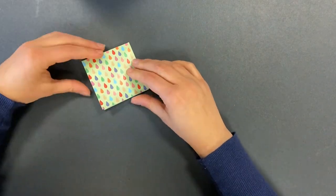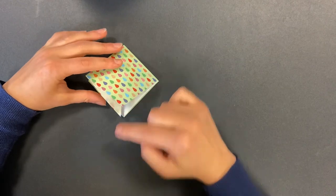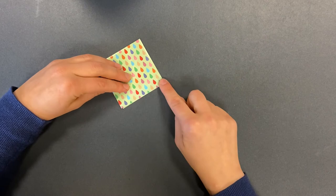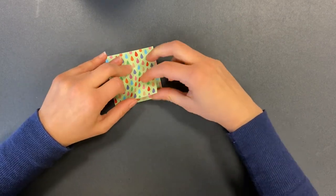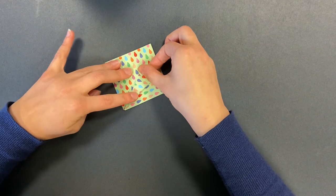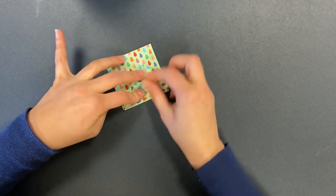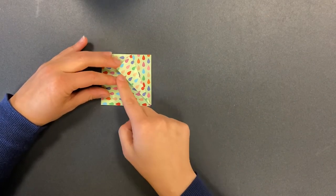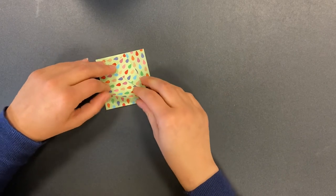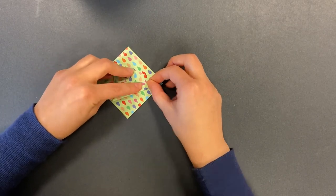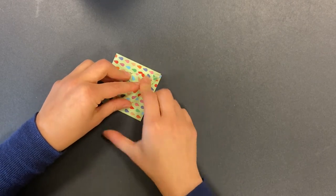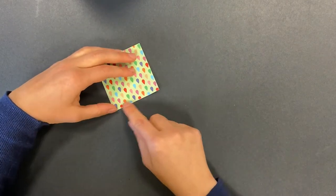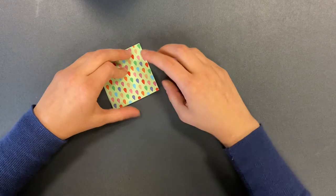Once you have that, with the open sides facing you, you're going to fold this edge to meet the center line. And then do the same thing on the other side. So this edge is going to meet the center line.